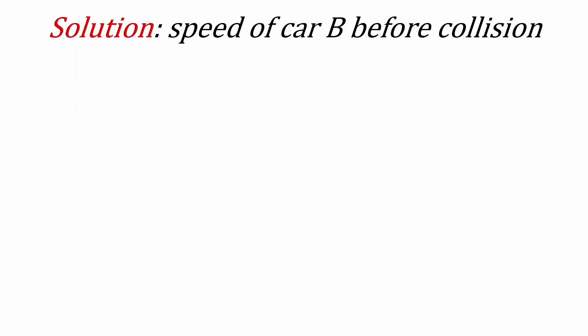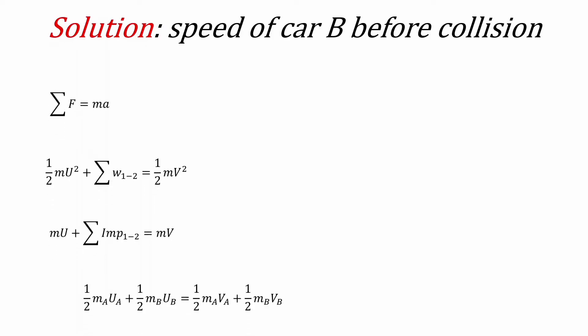The first question is how we should estimate the speed of car B before collision. To find that, we call out the equations used to estimate variables in kinetics when force is involved. There are four: Newton's second law, the energy equation relating kinetic energy and work done, the impulse and momentum equation, and the principle of conservation of momentum. Looking at Newton's second law, it relates mass, acceleration, and the summation of forces — this may not be suitable to estimate the speed of car B before collision.